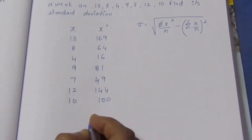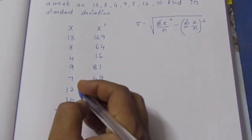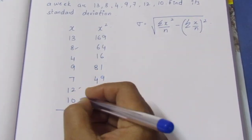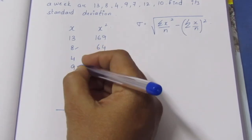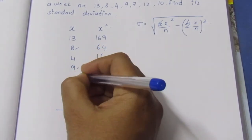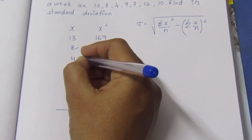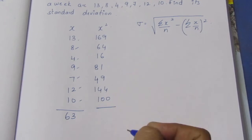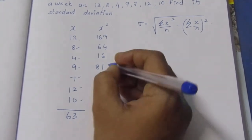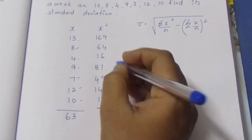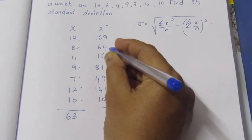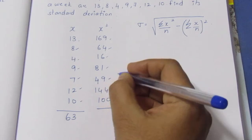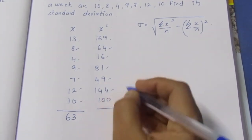Adding up the x column and x² column. The running totals for x are: 8, 20, 30, 39, 46, 50, 63. The total summation of x² comes to 623.